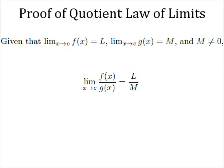In this video, we'll prove that given that the limit as x approaches c of f of x is l, and that the limit as x approaches c of g of x is m, and that m is not 0, the limit as x approaches c of f of x over g of x is l over m.